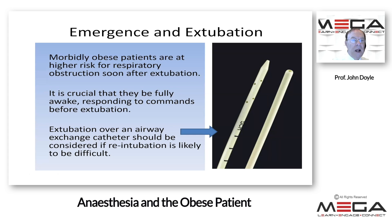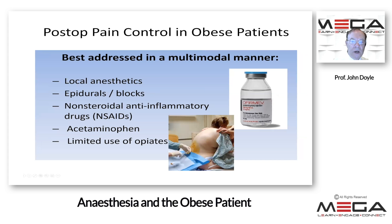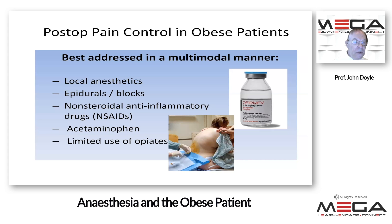Morbidly obese patients are at higher risk of respiratory obstruction soon after extubation. In patients who are difficult to intubate, extubation over an airway exchange catheter should be considered. Patients should be fully awake and responding to commands before extubation. For pain control, local anesthetics at the surgical field, epidurals and blocks, non-steroidal anti-inflammatory drugs, and acetaminophen/paracetamol can all be helpful. We recommend limited use of opioids because of the possibility of respiratory obstruction postoperatively.